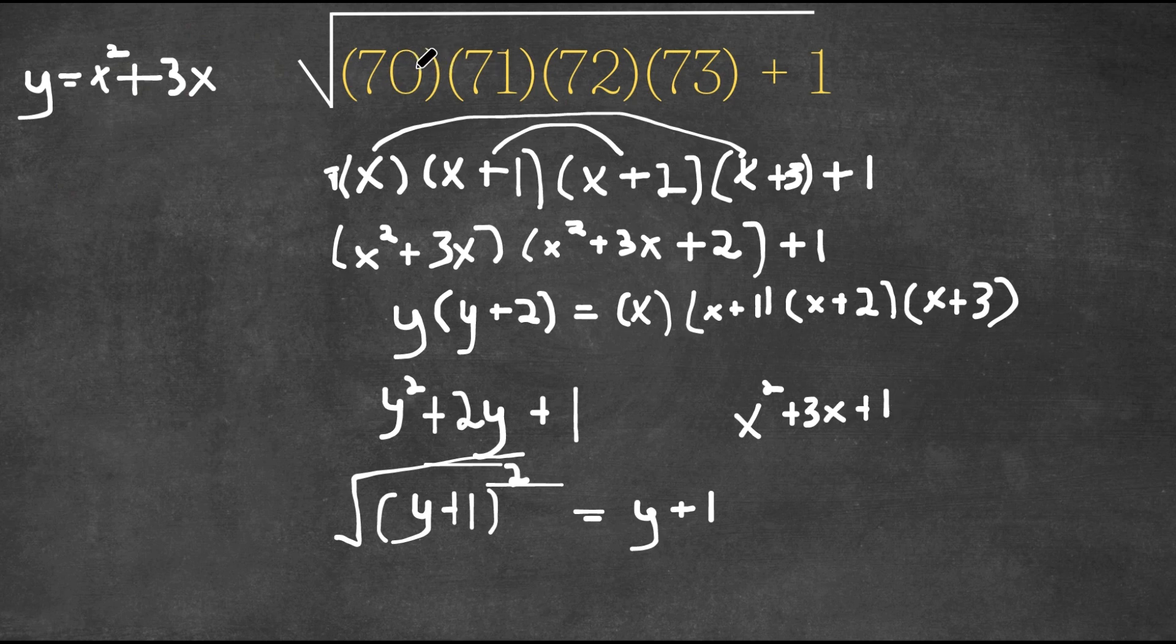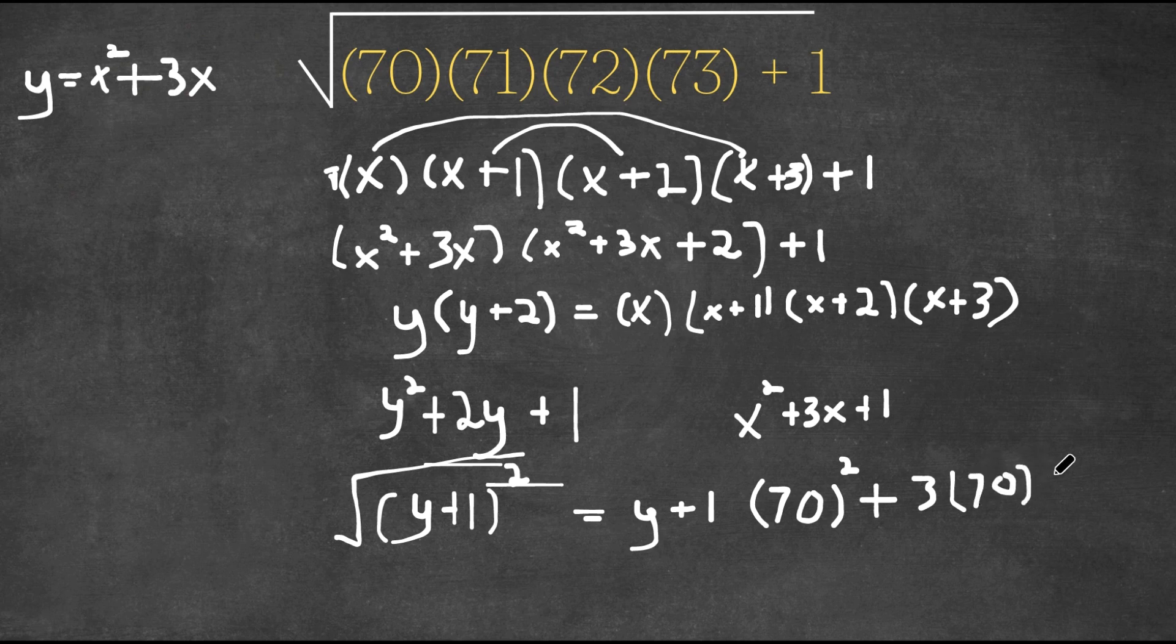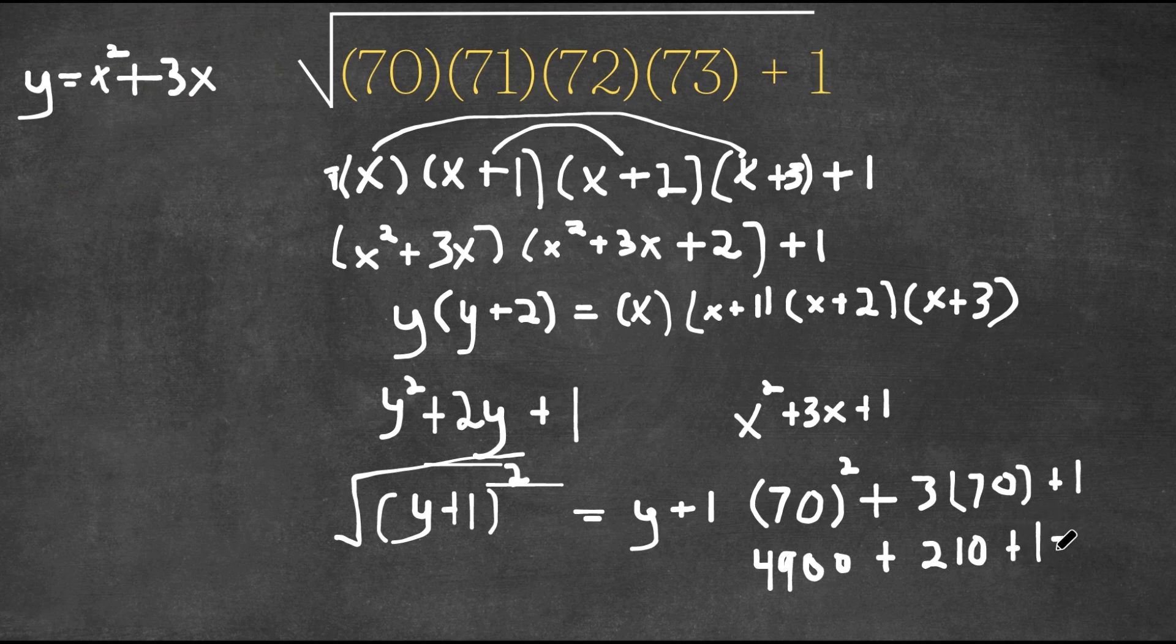And we already know that x is equal to 70. So if we plug in 70 into this, we would get 70 squared plus 3 times 70 plus 1. 70 squared is 4,900, plus 3 times 70 is 210, and we still have our plus 1. And now this is equal to 5,111. So this is our answer.